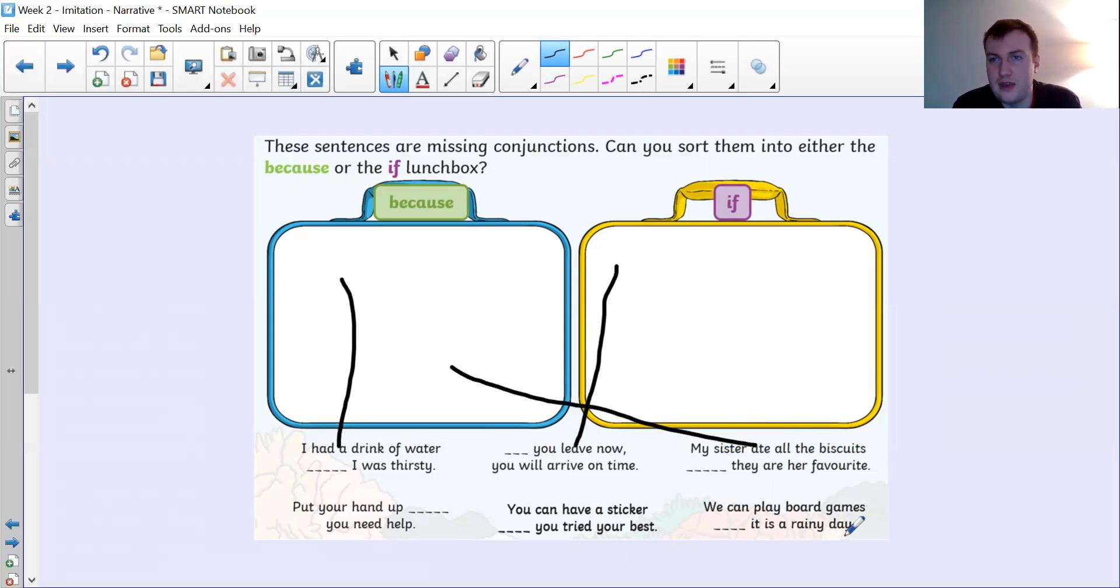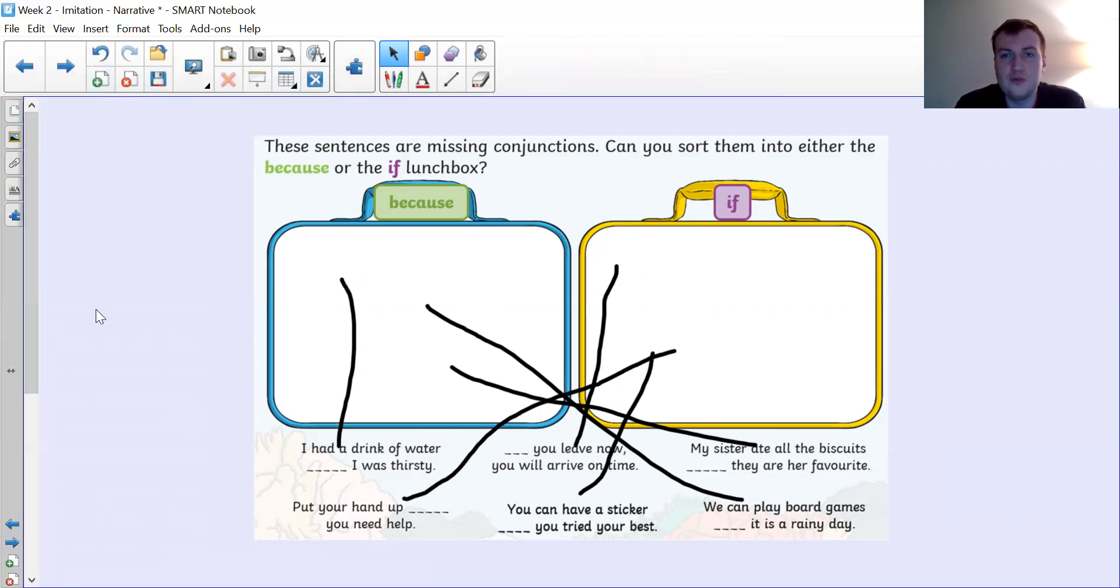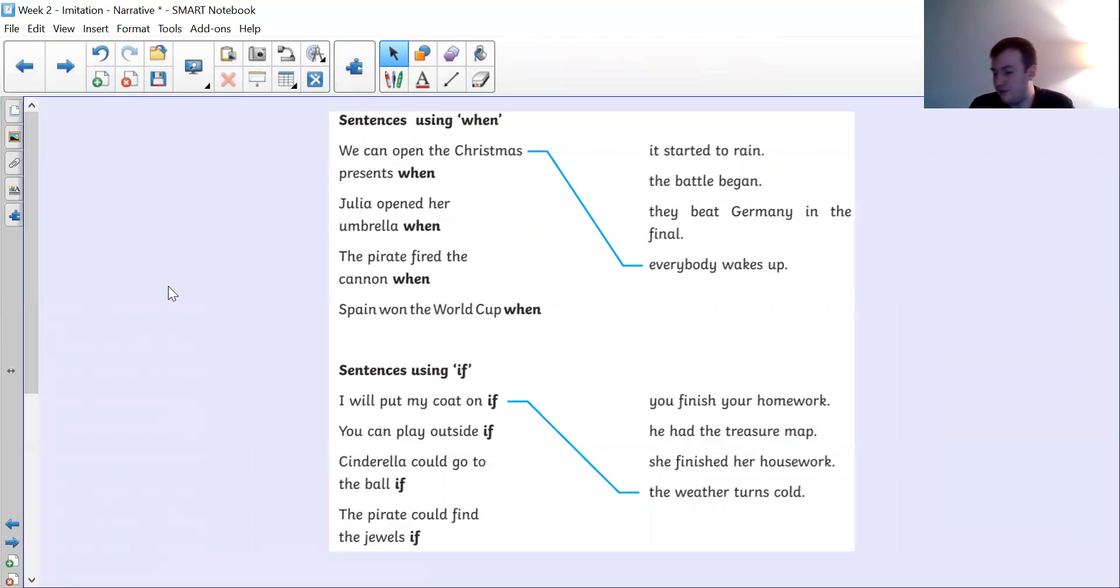My sister ate all the biscuits, they are her favorite. Well she did it because they are her favorite. Put your hand up, you need help. Well that's if, that's conditional. If you need help, put your hand up. You can have a sticker, you tried your best. Well you can have a sticker but only if you tried your best. And then we can play board games because it is a rainy day. So well done if you got those. Let's move on. Now we're looking at when compared to if.